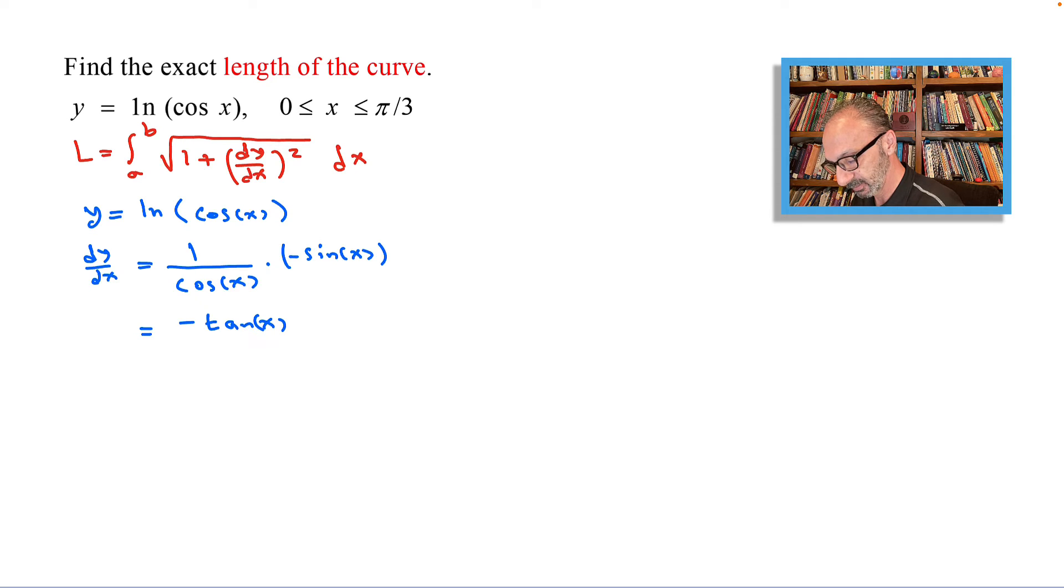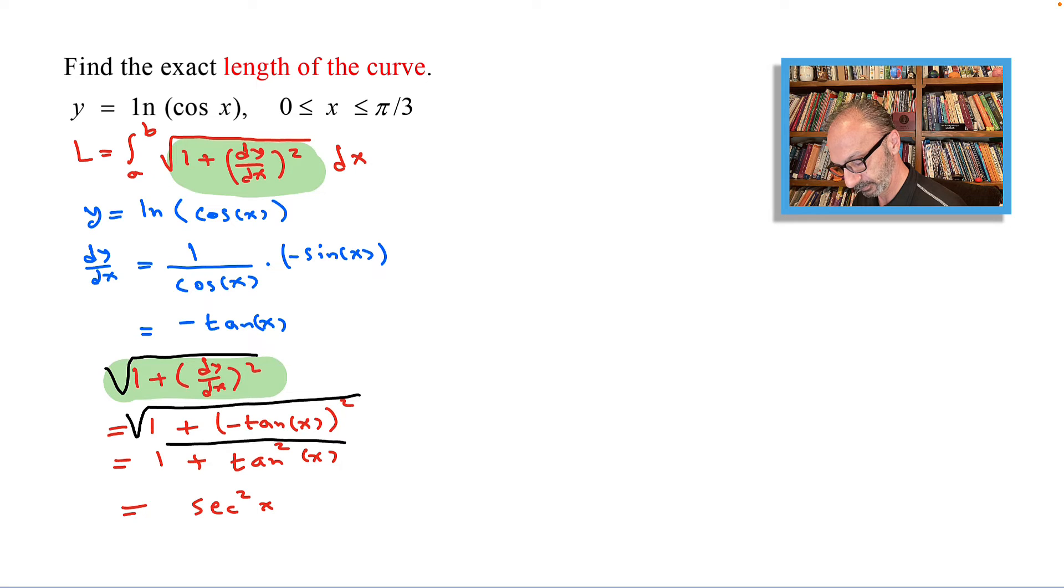Now what's inside is 1 plus the derivative squared. So 1 plus dy dx squared equals 1 plus minus tan x squared, which is 1 plus tan squared x, and that equals secant squared x. But if I apply the square root, I get the square root of secant squared, and that is just secant x.